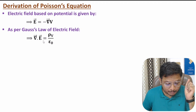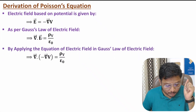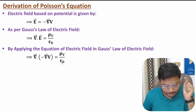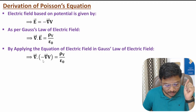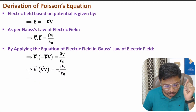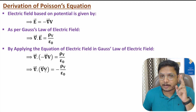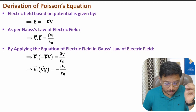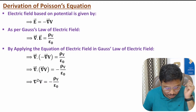Now I'll apply the relation E = -∇V into Maxwell's first equation. Substituting, we get del dot (minus del V) equals rho_v by epsilon naught. Taking the negative sign out to the other side, we have del dot del V, which equals the divergence of the gradient of V. Del dot del is del squared, also known as the Laplacian operator.